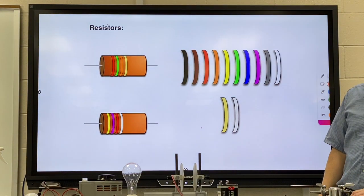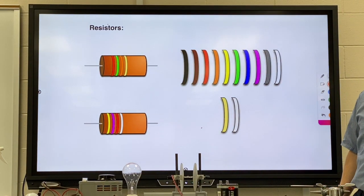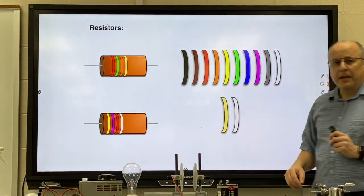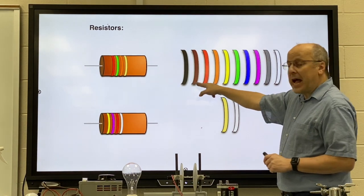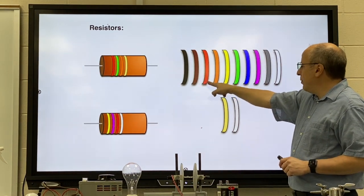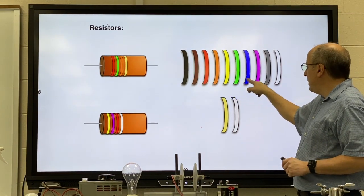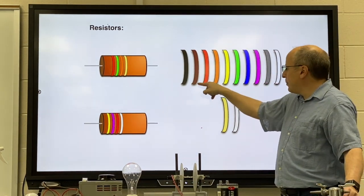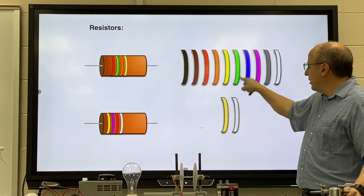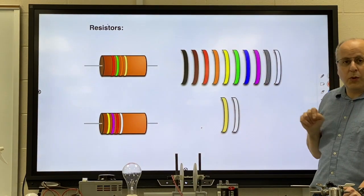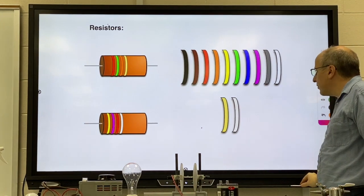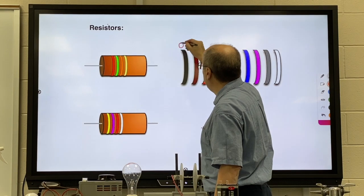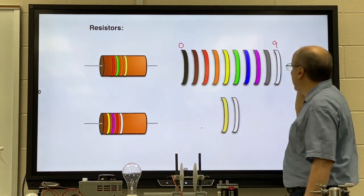Here's the color code. You can write this down on one of your reference sheets. The colors run from black to white and they go like this: black, brown, then the rainbow ROY G BV, and then gray, white. So it's black, brown, red, orange, yellow, green, blue, violet, gray, and white. Each color represents a different digit. We start on this end with zero and we end on this end with nine.